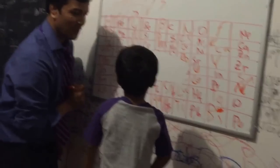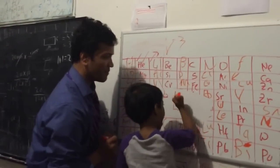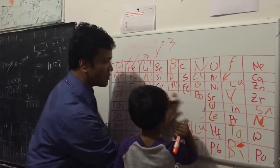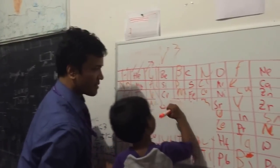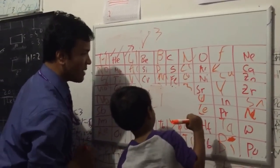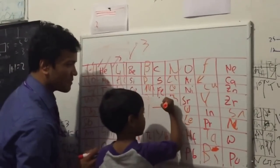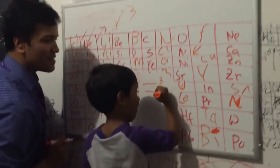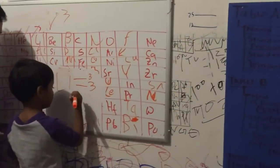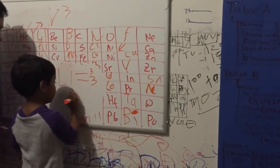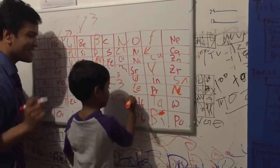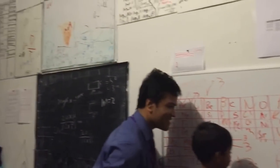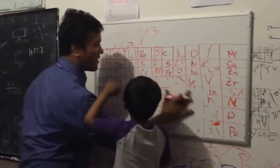What is the atomic number for lithium? Three. And how many protons in lithium? Three. So what is the atomic mass for lithium? Three plus three equals six. Very good!